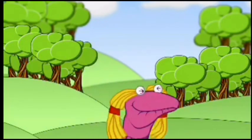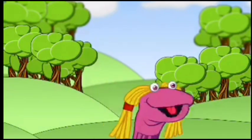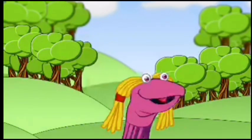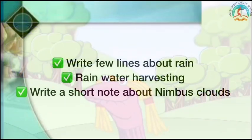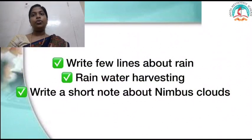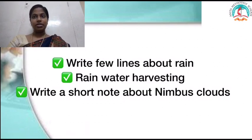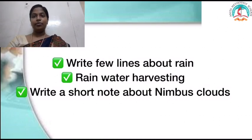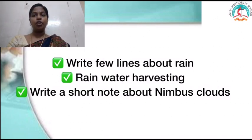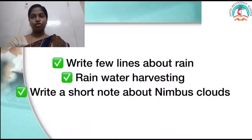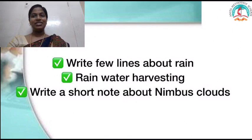We have discussed the different categories of clouds. I hope you understood. We will meet in the next class. Children, I hope you understood today's lesson. Take out your social classwork and write a few lines about rain and rainwater harvesting. Also write a short note on nimbus cloud. We have discussed different cloud types. Write a short note on nimbus cloud. We will meet in the next class. Have a nice day.